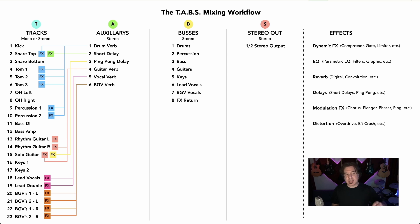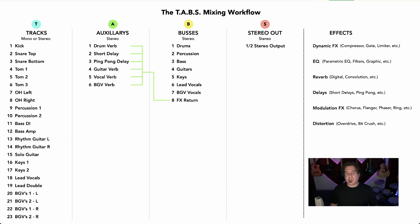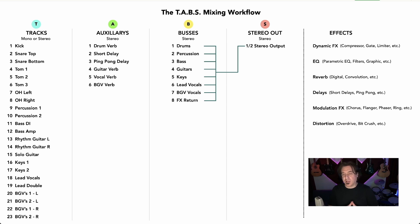These tracks that I want to affect are going to be sent using a send — we send them to our auxiliaries. All of our effects on our auxiliaries are going to be 100% wet, like on a mixing board. It's important to note that all of my auxiliary effects are going to be dumped down into an effects return bus, which encompasses pretty much all my routing for my buses and auxiliaries. Then the last part of the equation is all of those buses will be sent to my stereo out, where you're probably going to want your mastering chain for the final sauce on your mix.